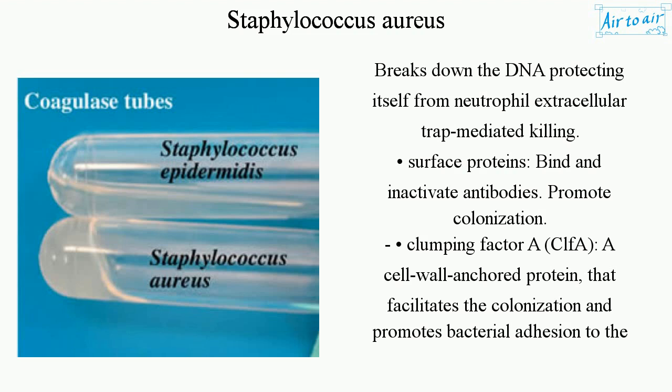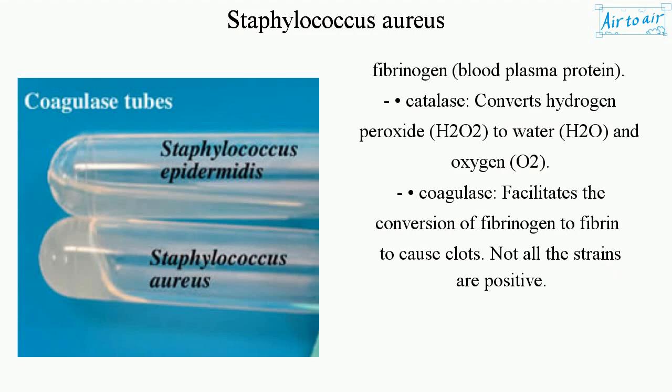Surface proteins bind and inactivate antibodies and promote colonization. Clumping factor A (ClfA) is a cell wall-anchored protein that facilitates colonization and promotes bacterial adhesion to fibrinogen, a blood plasma protein. Catalase converts hydrogen peroxide (H2O2) to water (H2O) and oxygen (O2). Coagulase facilitates the conversion of fibrinogen to fibrin to cause clots; not all strains are positive.